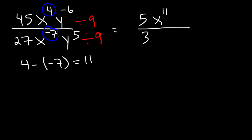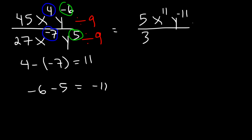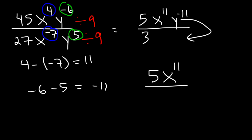Next, we have negative 6 minus 5. Negative 6 minus 5 is negative 11. It's negative 11 initially on top, so after you divide, always put the variable on top. Now if you have a negative exponent, you can move it to the bottom. So the final answer is 5x to the 11th divided by 3y to the 11th.